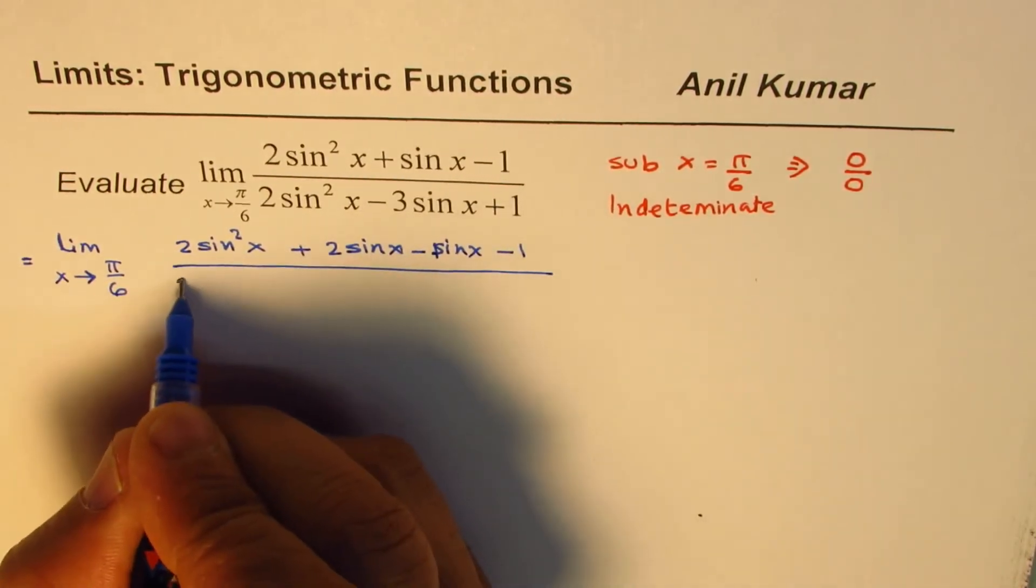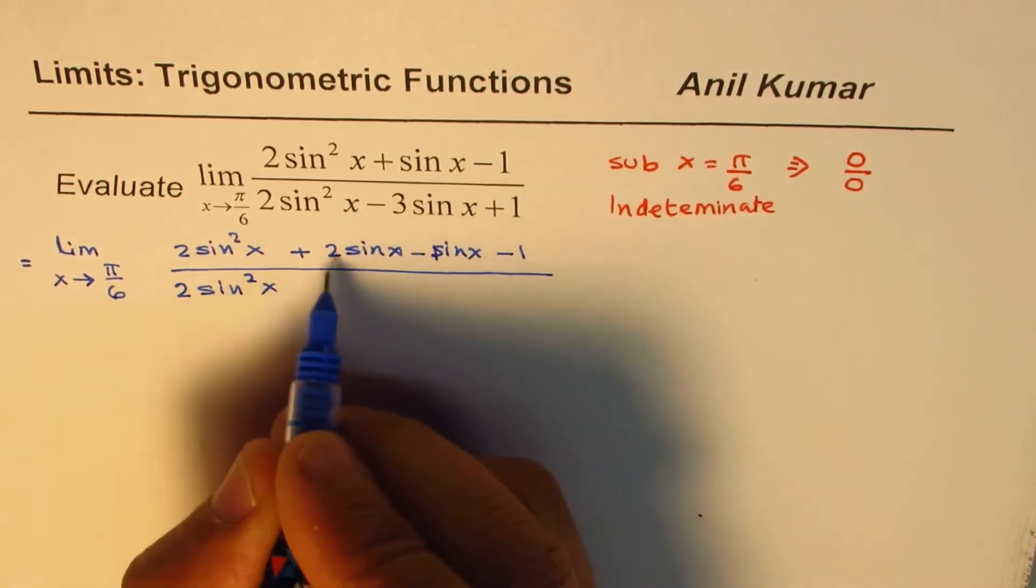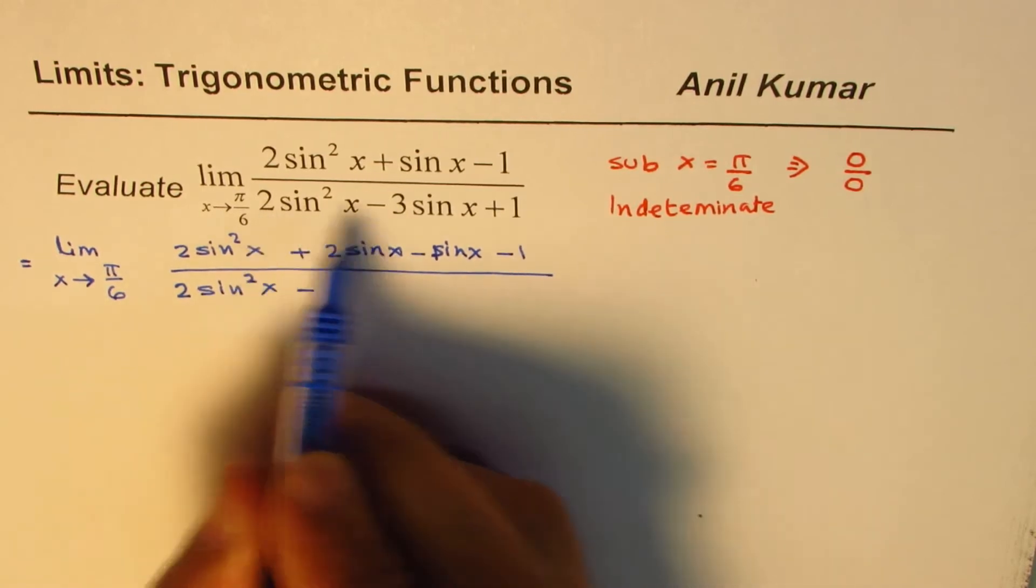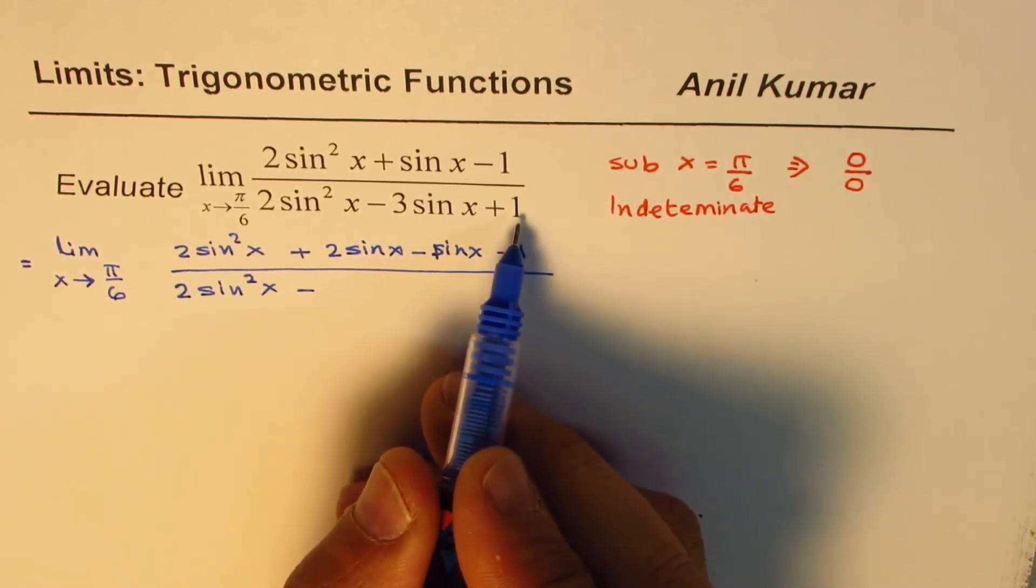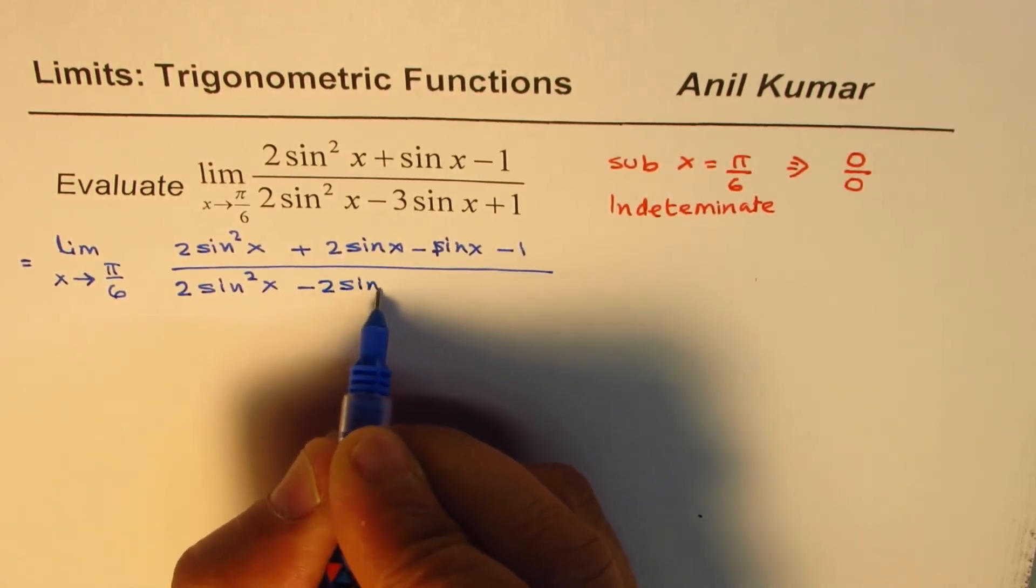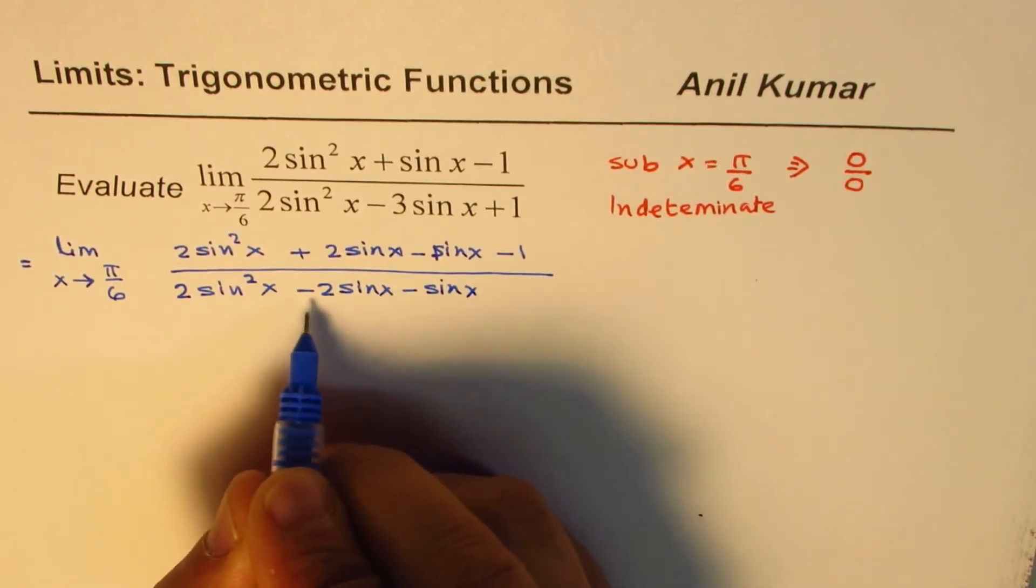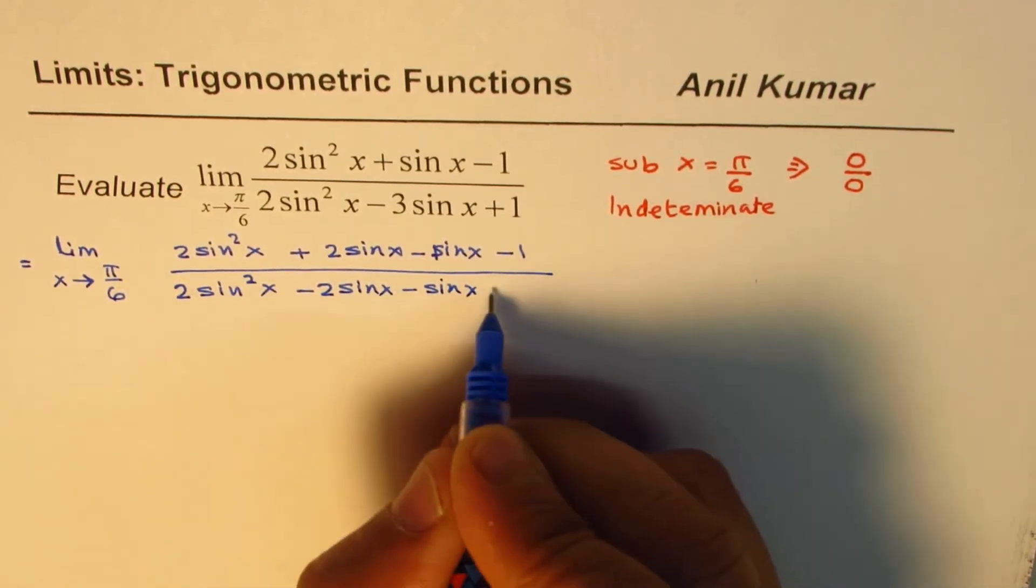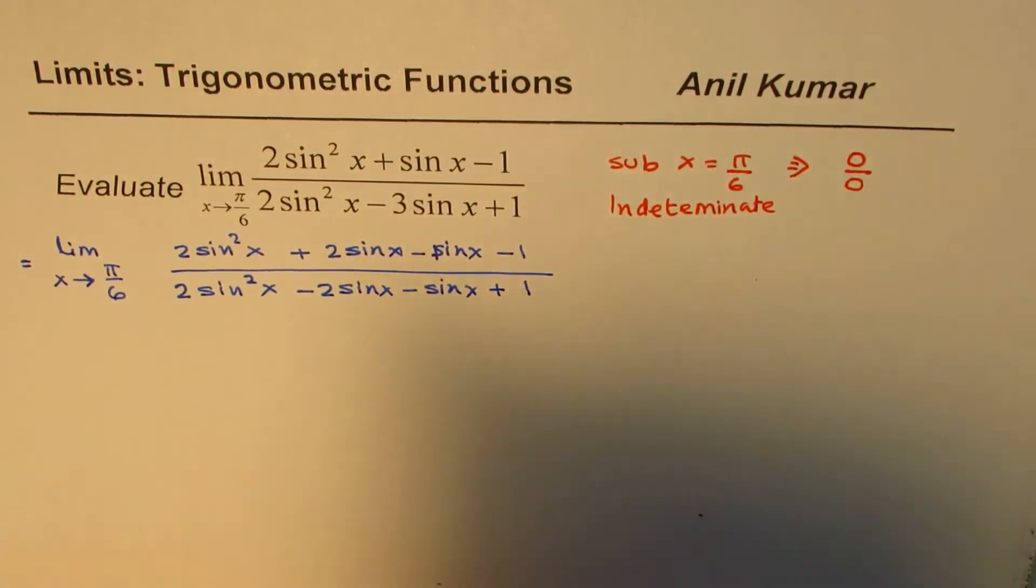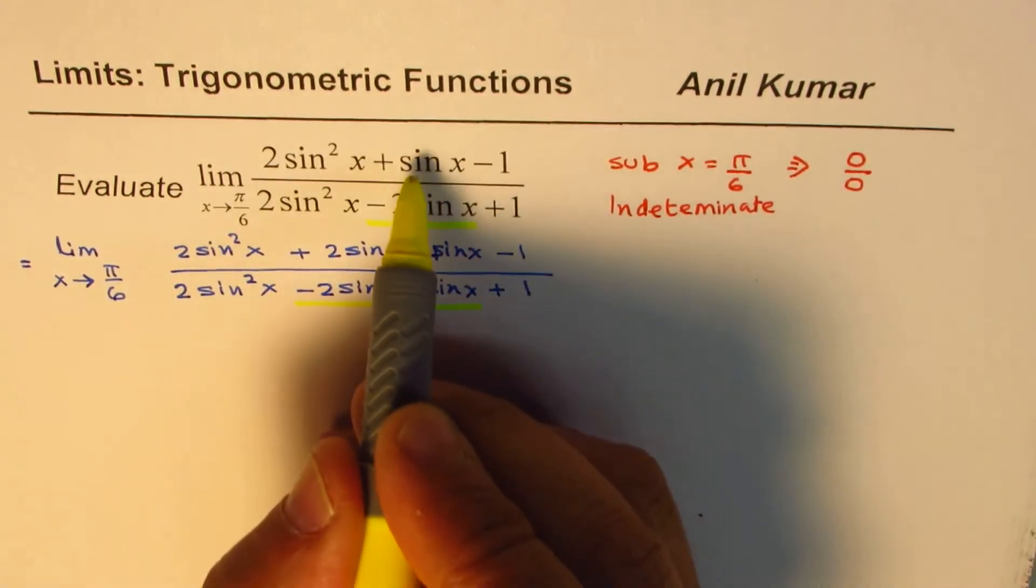Similarly for the denominator, we have 2sin²x minus. We need to get -3sinx as the sum and plus 2 as the product. So the two numbers should be -2sinx and -sinx. So -3sinx is being written as -2sinx minus sinx plus 1. So that is how we wrote the center terms. The center term -3sinx has been written as this. That helps in factoring.